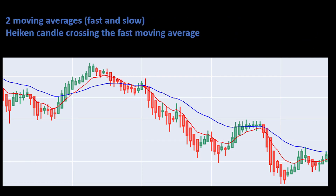The first strategy uses two moving averages — one fast and one slow — to determine the trend. If the fast moving average is above the slow moving average, we consider we have an uptrend and look for a buying position. In the opposite case, if the fast moving average (the red curve) is below the slow moving average (the blue one), we consider we are in a downtrend and look for selling positions.